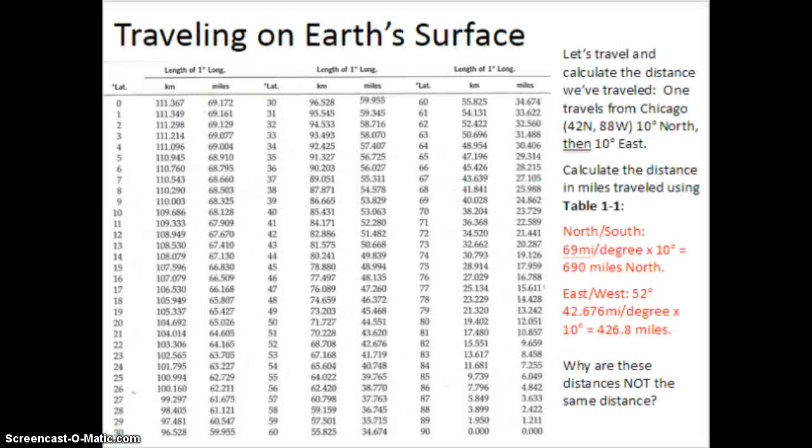Table 1-1 kind of reiterates that very point. At the equator, a one degree by one degree map would be pretty square, right? 111 kilometers by 111 kilometers, or 69 miles by 69 miles. But the further I get, and this is what this is showing, the latitude, as I move from the equator away from it all the way up to 90 degrees, you'll see that the distance between them gets closer together.